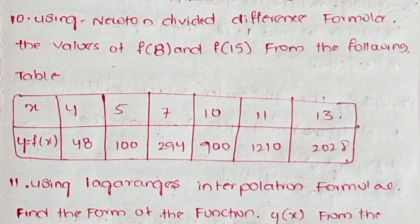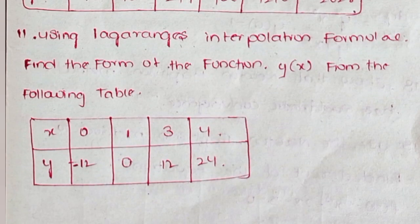Question 10: Using Newton divided difference formula, find the values of f(8) and f(15) from the following table: x values 4, 5, 7, 10, 11, 13; y = f(x) values 48, 100, 294, 900, 1210, 2028. Question 11: Using Lagrange's interpolation formula, find the form of the function y(x) from the following table: x values 0, 1, 3, 4; y values -12, 0, 12, 24.